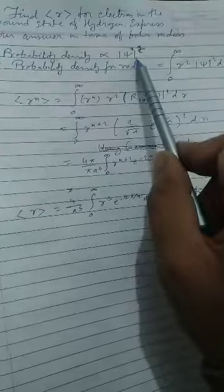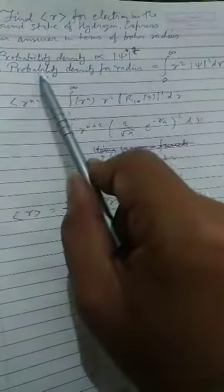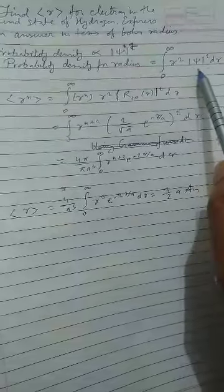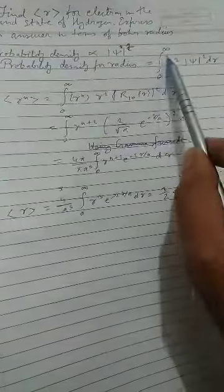Probability density is proportional to mod psi square. Probability density for radius is equal to R square mod psi square dR, integration from 0 to infinity.